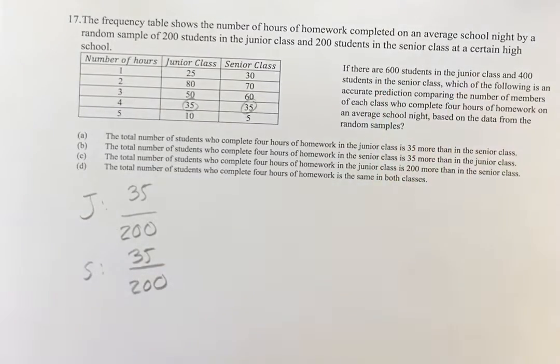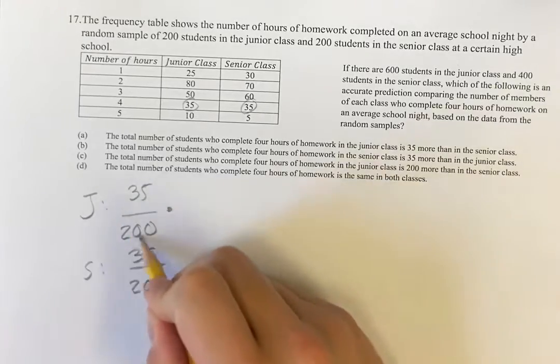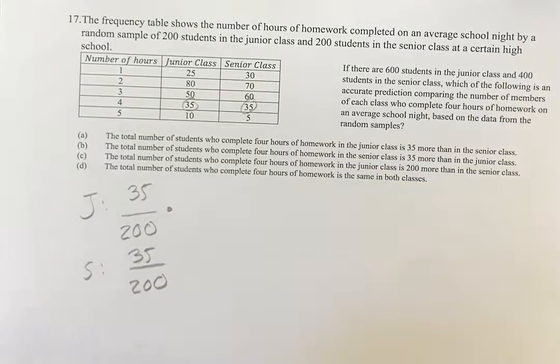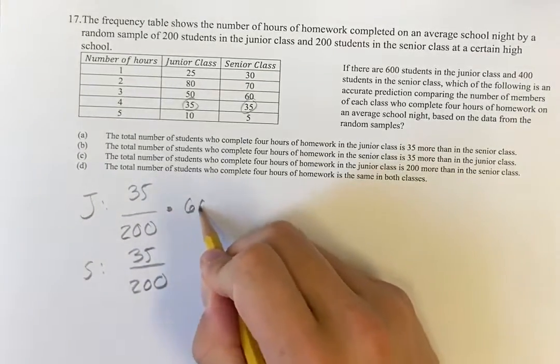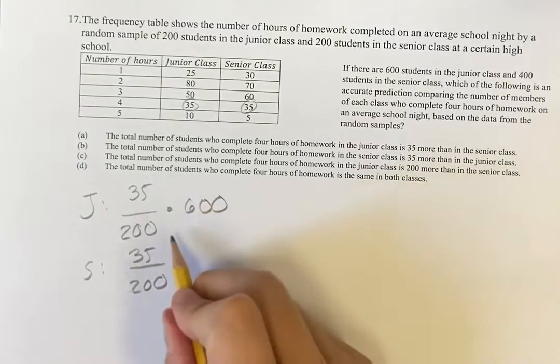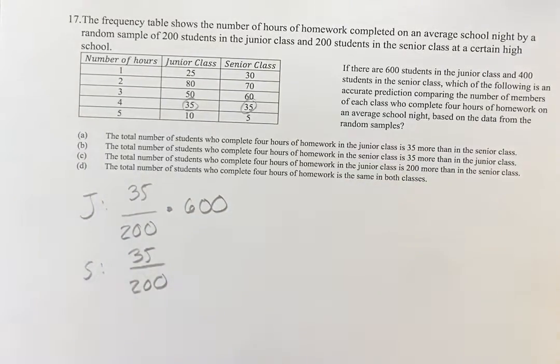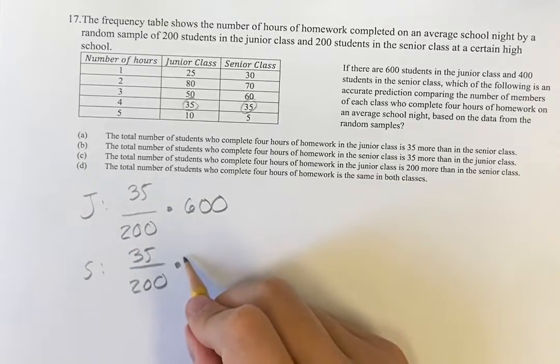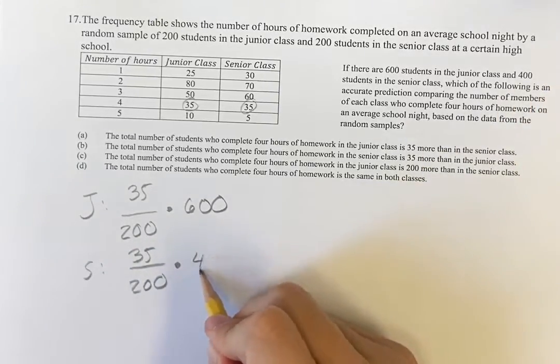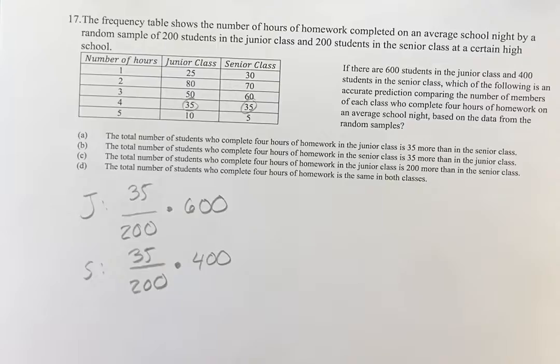So if there's 600 students in the junior class, then we can say if this fraction are studying for four hours, and if we multiply that, we're multiplying 600 by whatever percentage it is, we're going to get our answer. Same here, there's 400 students in the senior class, same sort of thing.